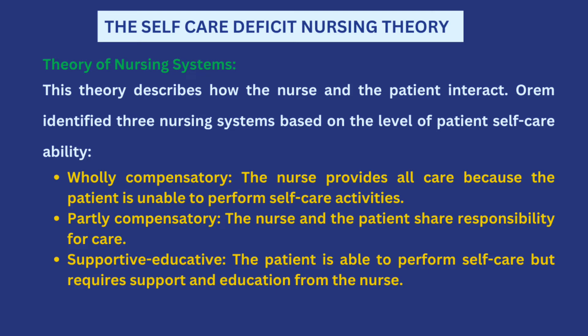The third part of the theory is the theory of nursing systems, which describes how the nurse and the patient interact. Orem identified three nursing systems based on the patient's level of self-care ability. The first is the wholly compensatory nursing system, where the nurse provides all the care because the patient is unable to perform self-care activities — examples include unconscious patients, bed-ridden patients, or patients who are very weak and fragile.